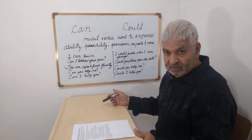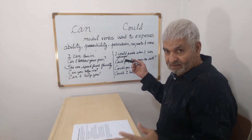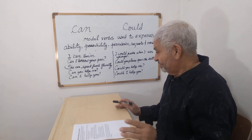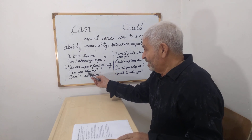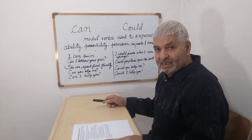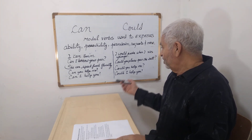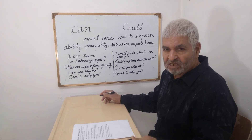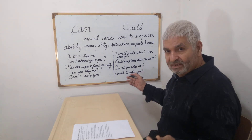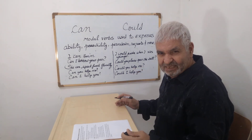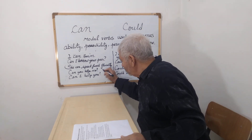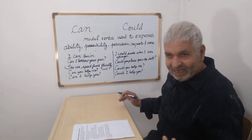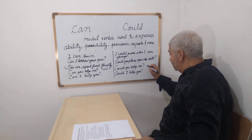So the difference: 'can' is for the present and has to do with the future, and 'could' is for the past. But also, when you say 'Can you help me?' that's casual. When you say 'Could you help me?' you want to be polite. When you want to be polite, you use 'could'.